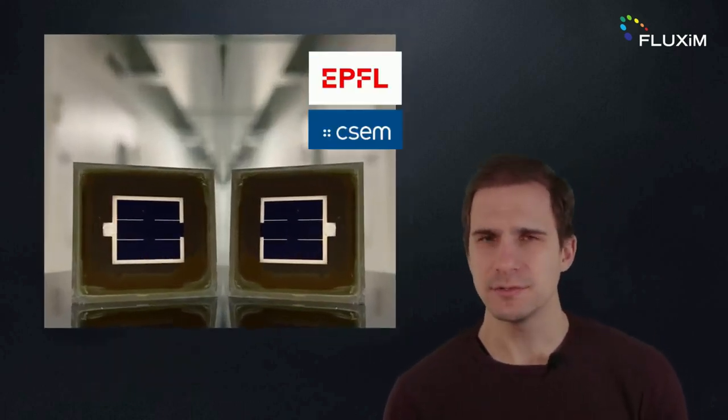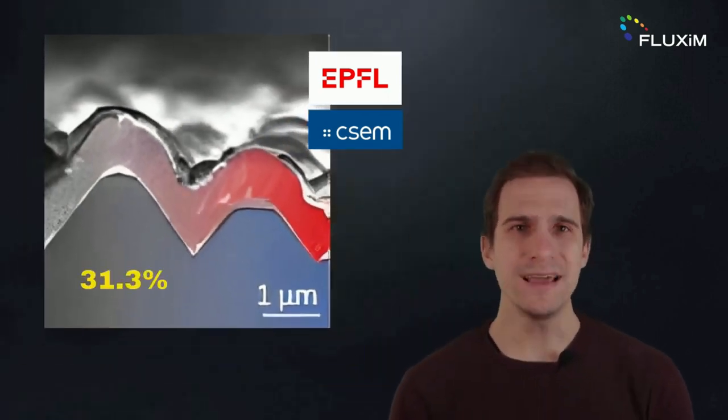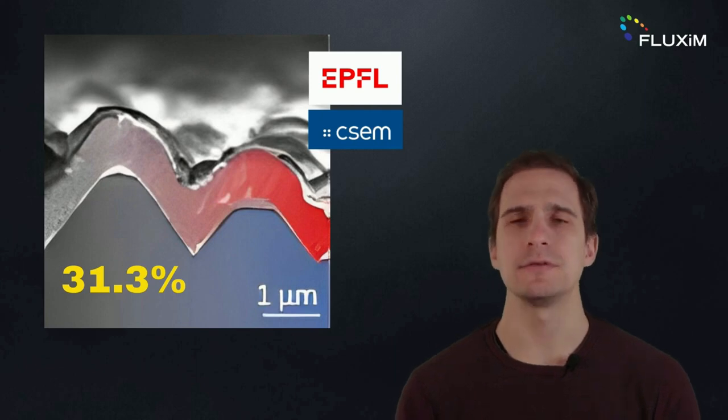For a tandem solar cell with micrometric texture and conformally deposited perovskite, the highest certified efficiency amounts to 31.3%. Getting the most out of solar cells requires not only good light management, but also limiting losses by recombination at the interfaces.